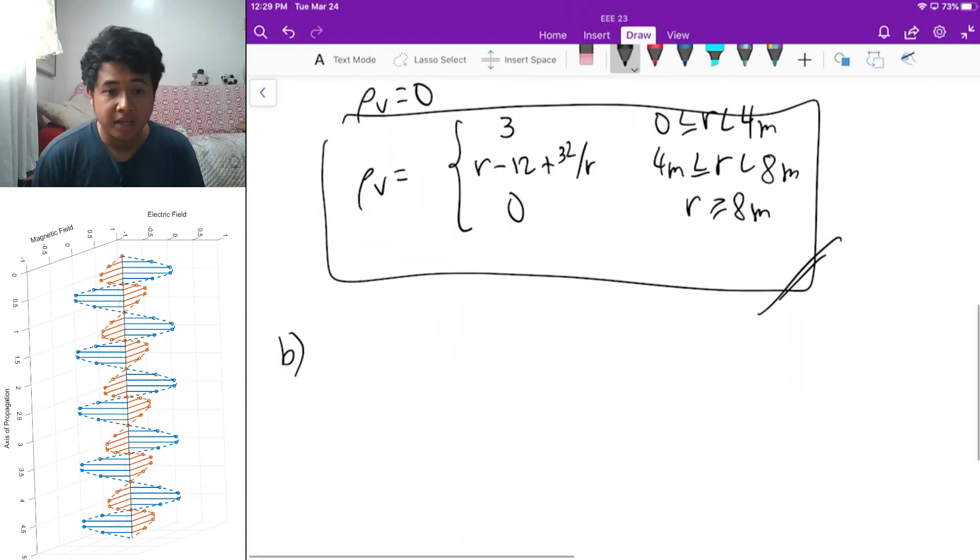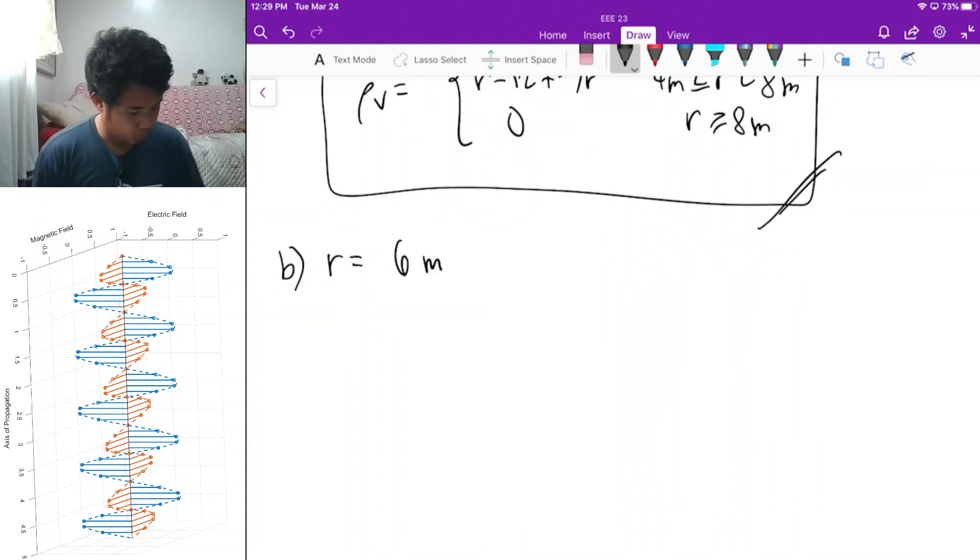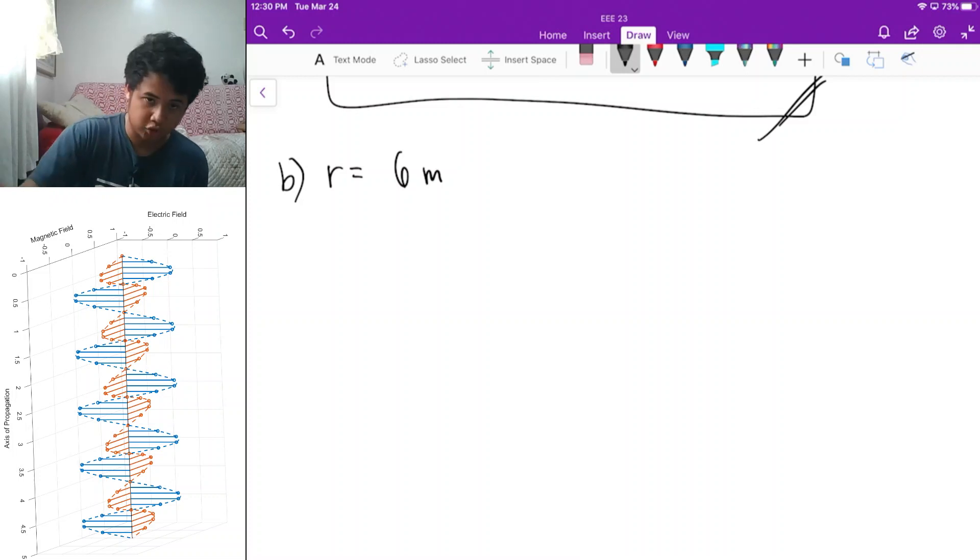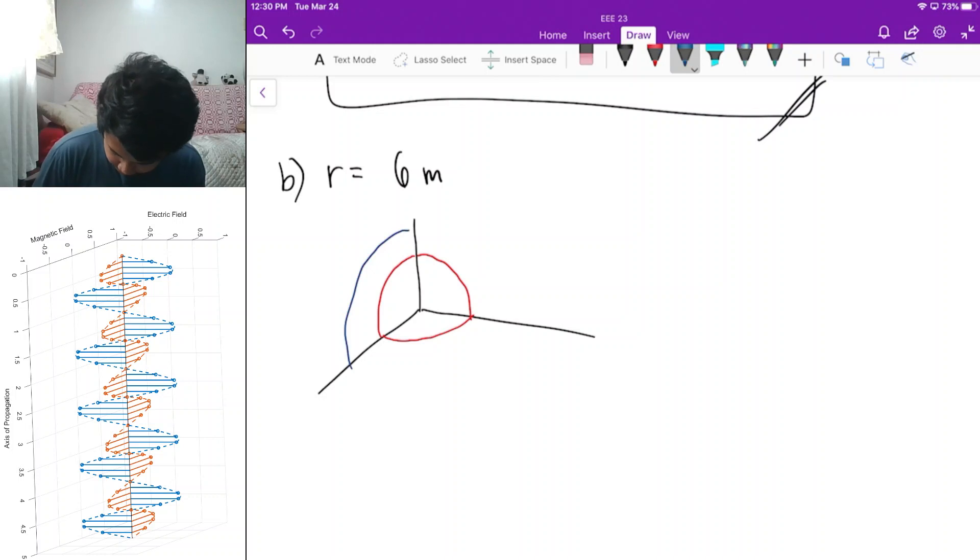For B, determine the total charge enclosed by the region r is equal to 6 meters. First step is to visualize it. In the distribution, we have two regions, three rather, but the other one there's no charge density. So the first region is here. The second region is this one. And at r is equal to 6, it's this region.